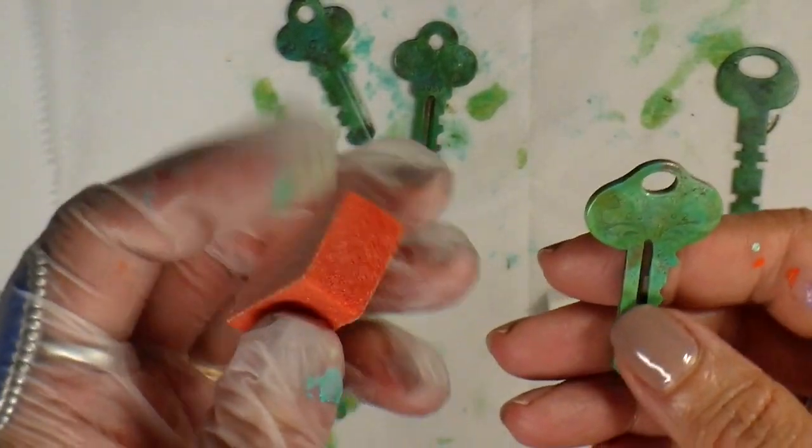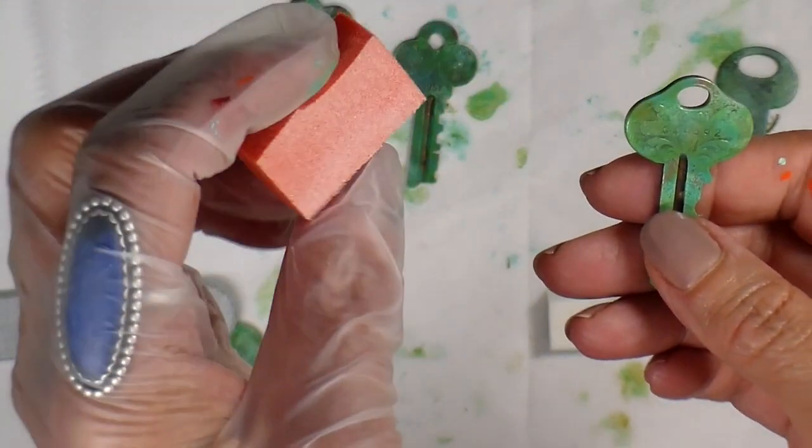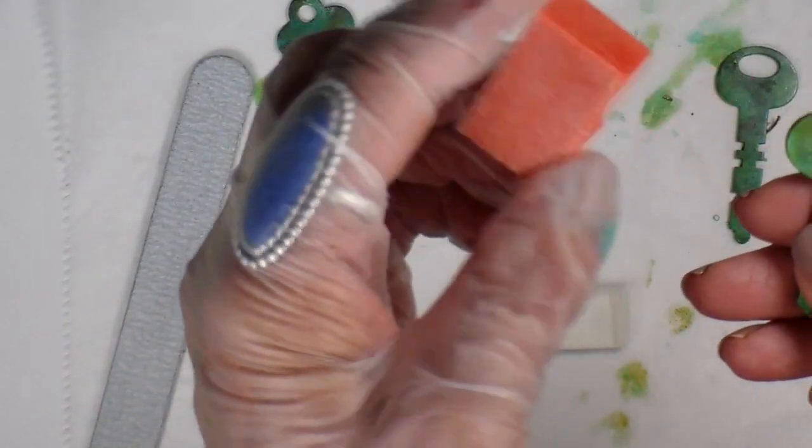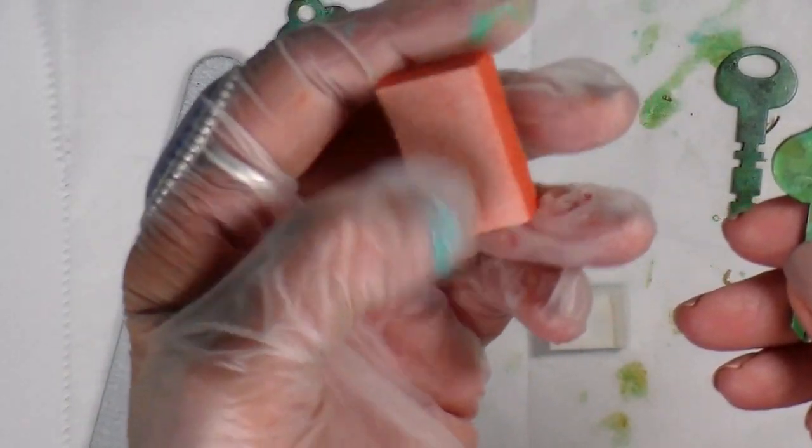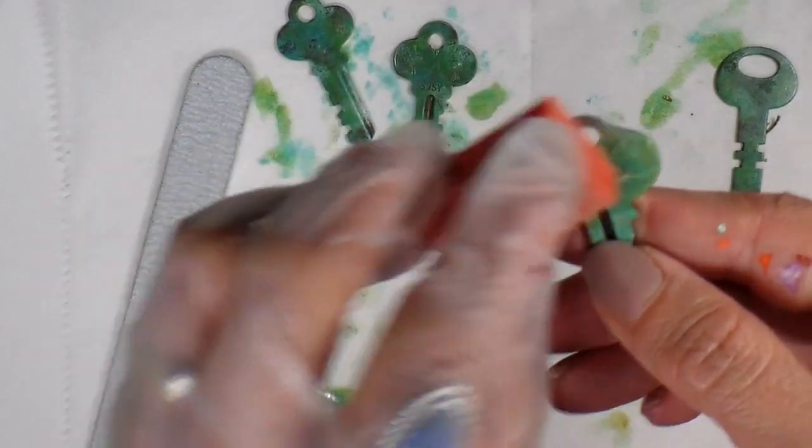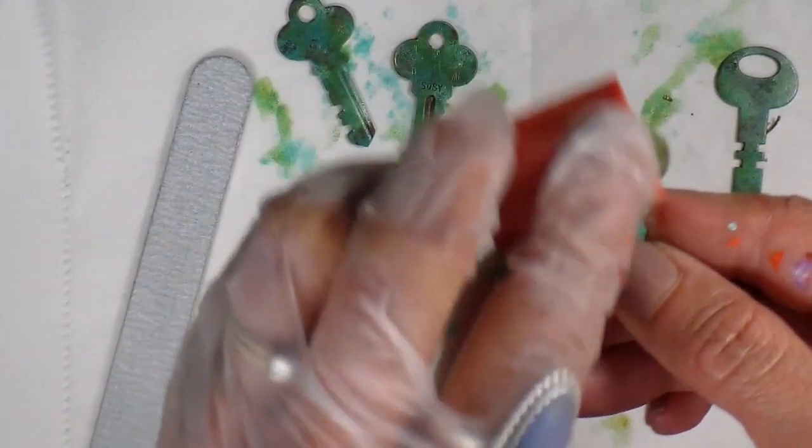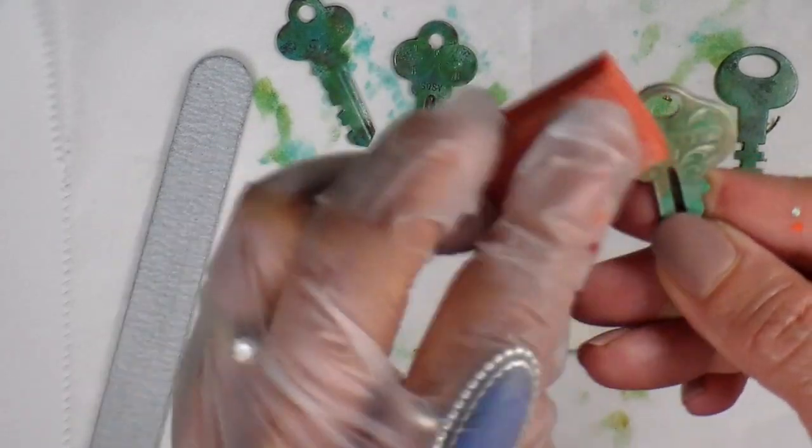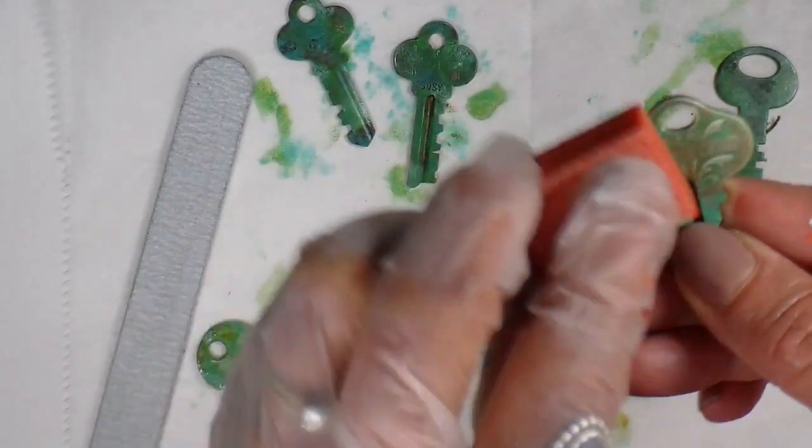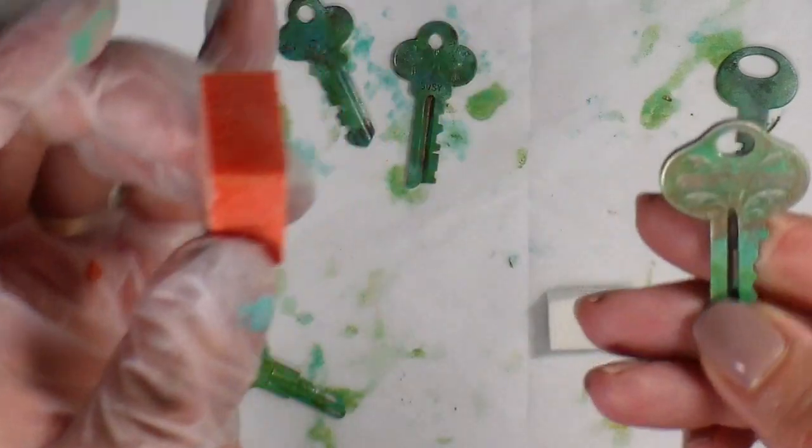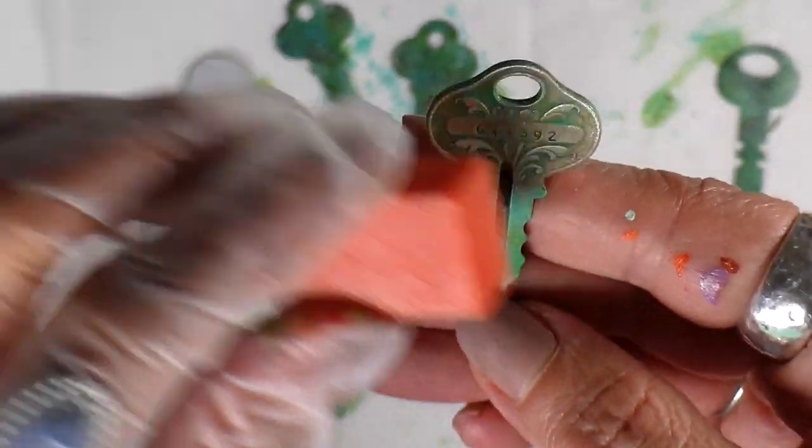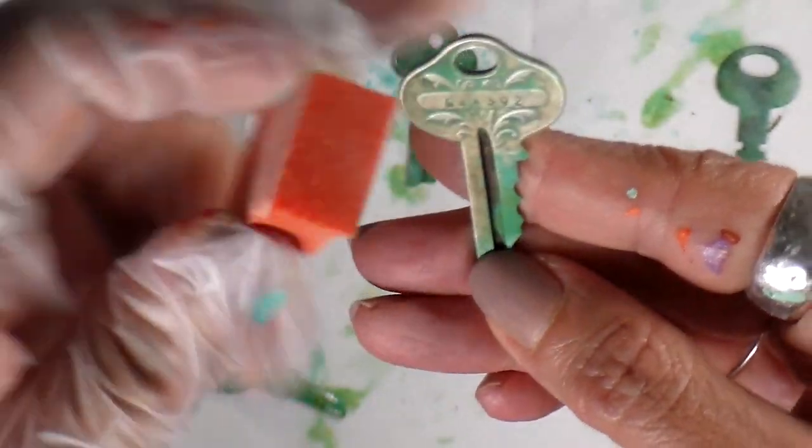When both sides are dry, I like to take a little file or an emery nail file. I like to go and just take some of the paint off, especially if the key has some interesting markings on it. For instance, this one has a little bit of filigree and a number that's really kind of cool.